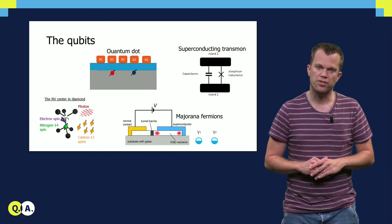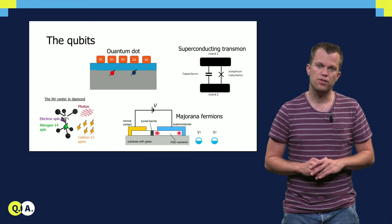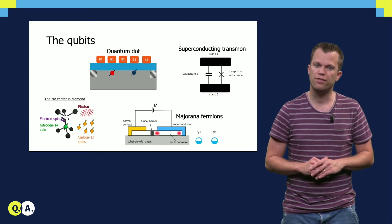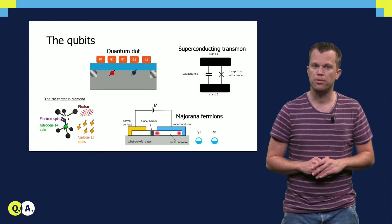Spin qubits in quantum dots also exhibit very long coherence times. But they also offer the advantage of being man-made. This allows to realize qubits at a predefined location, which is clearly beneficial for scaling up the number of qubits.